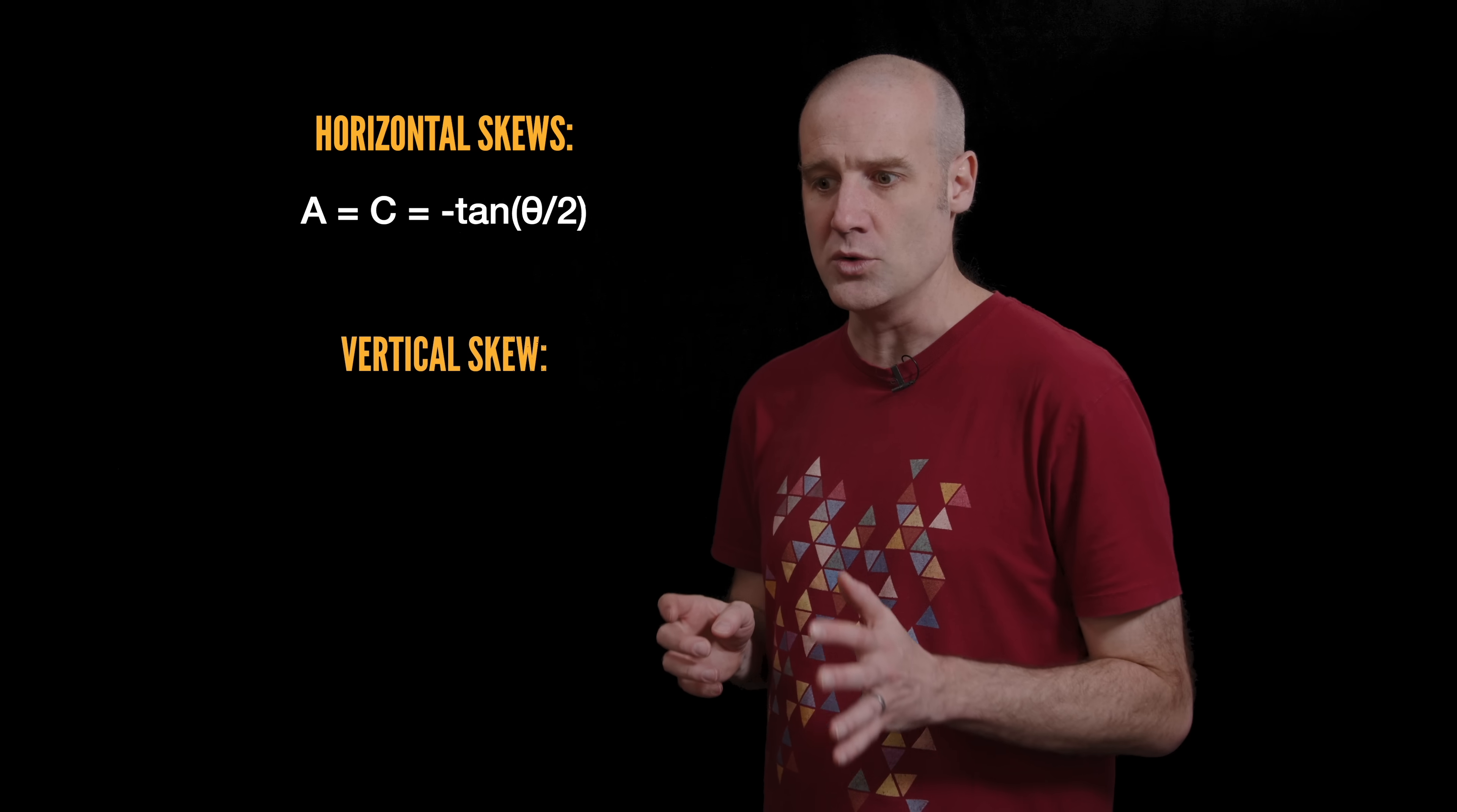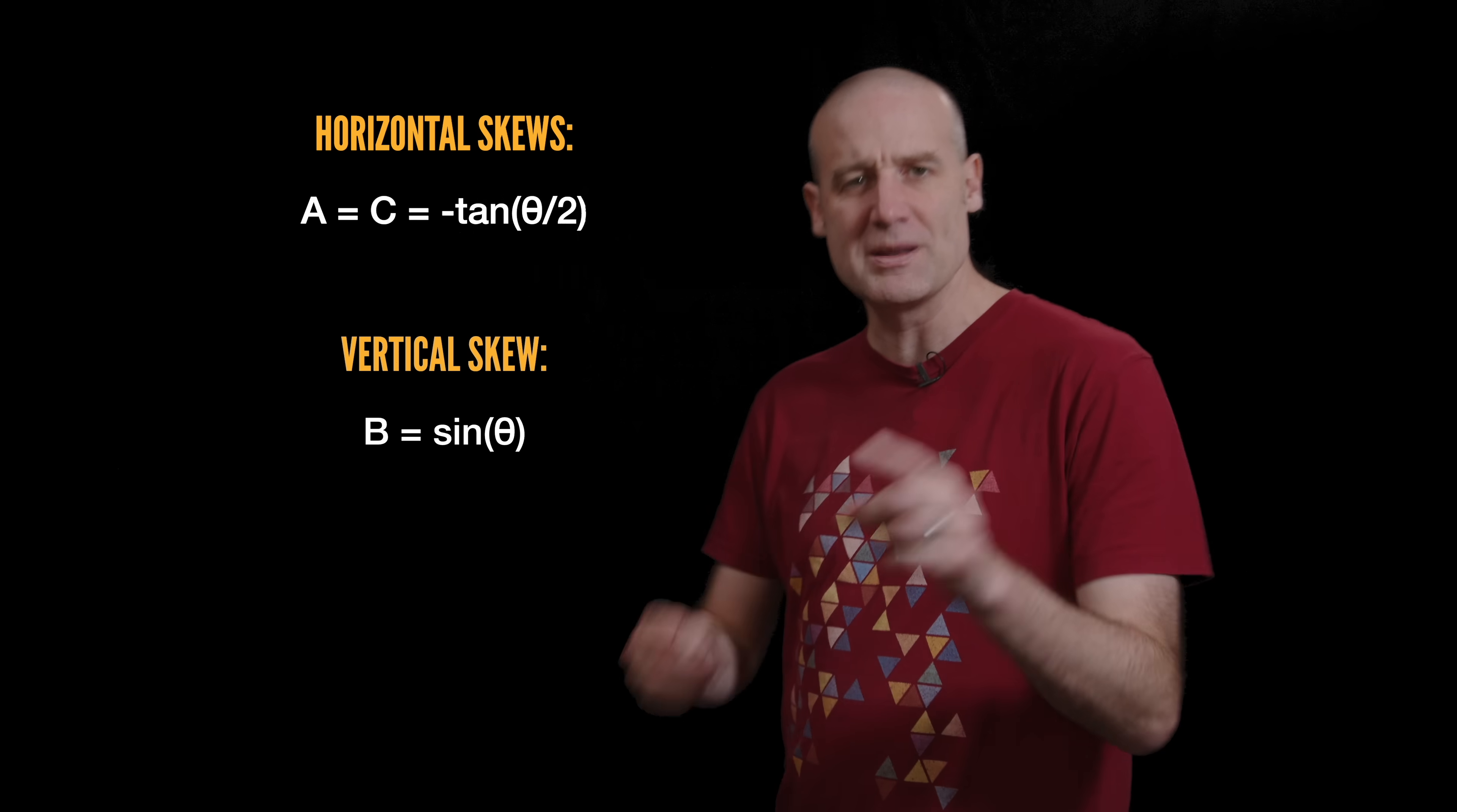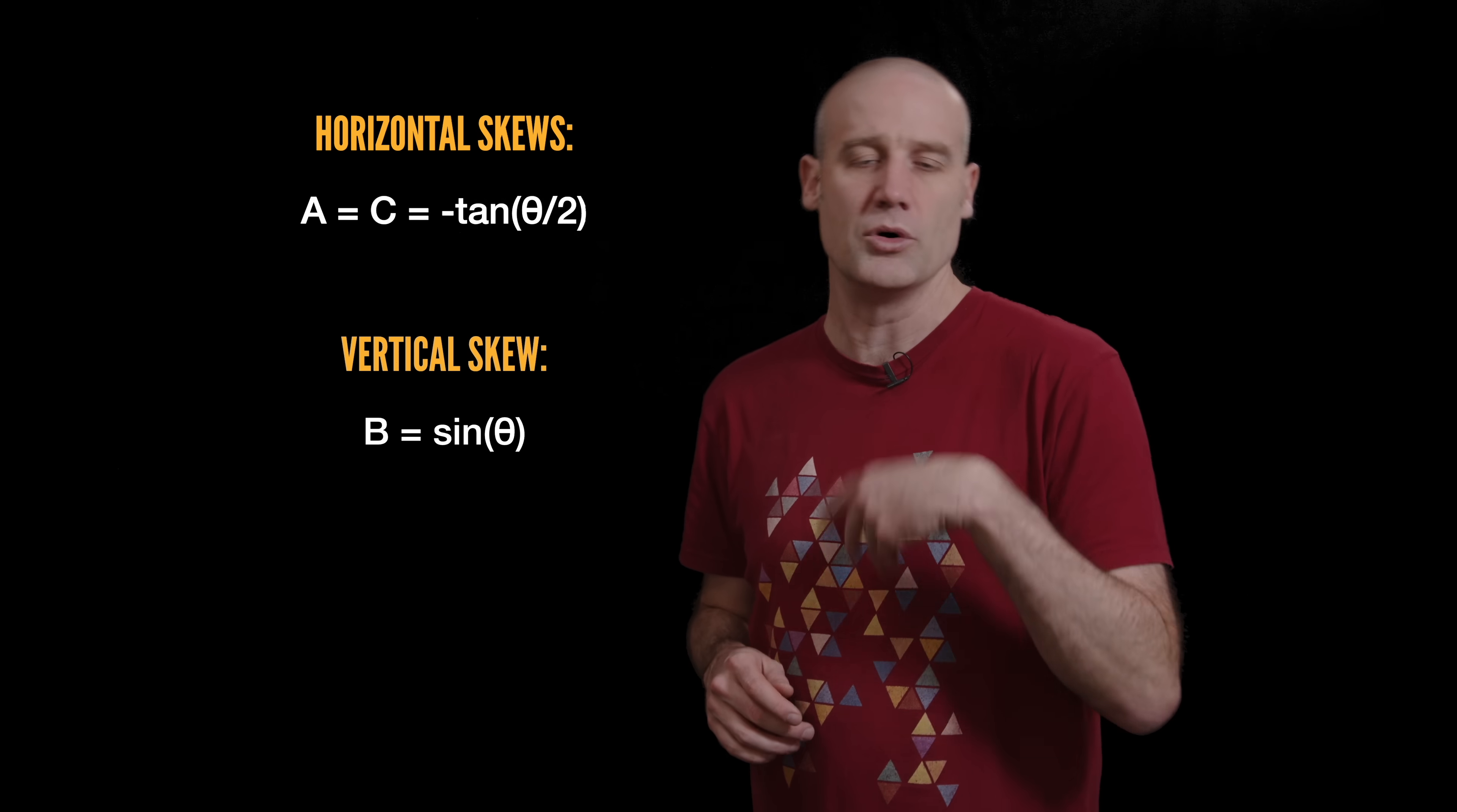And then the vertical skew is the sine of the whole angle you want to rotate through, although one of them has to be negative. Either the tan's negative and the sine's positive or the sine's negative and the tan's